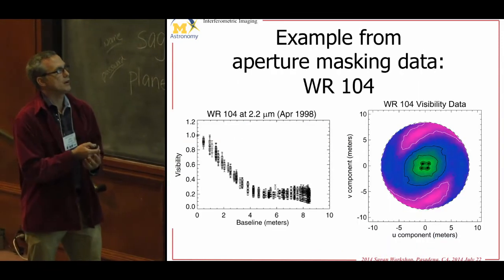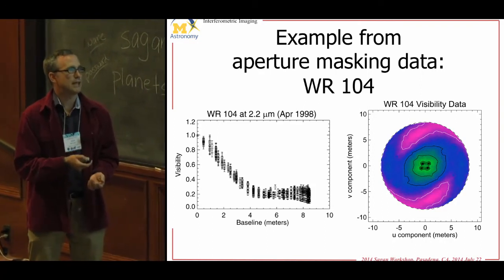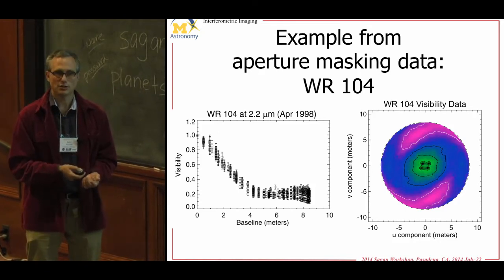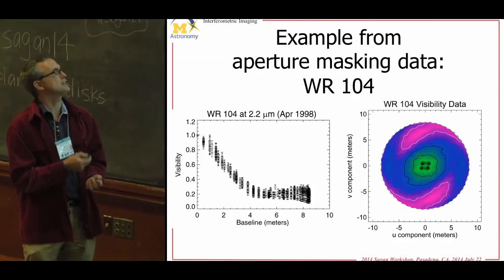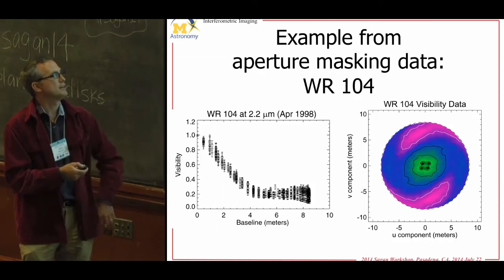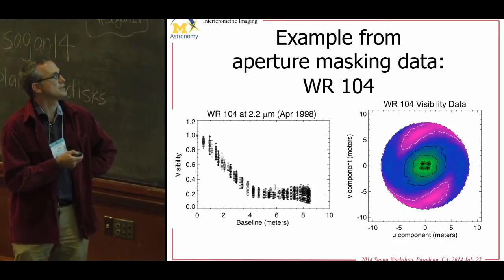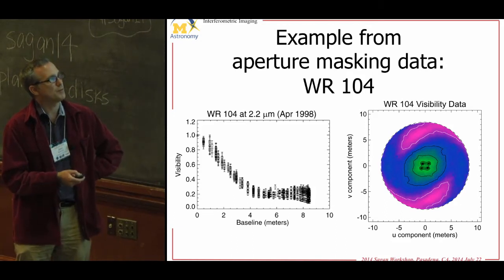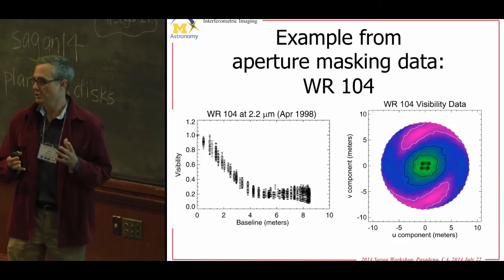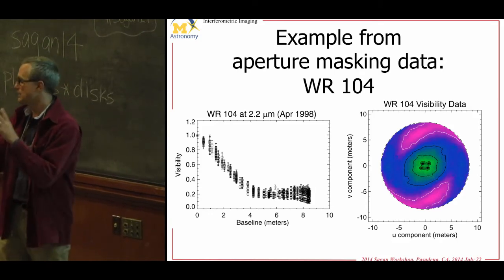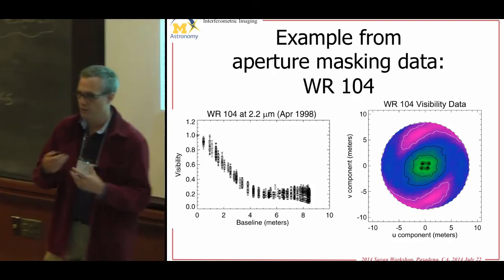With non-redundant aperture masking you get very good UV coverage — the baseline plane showing which baselines you have. With aperture masking you can have almost perfect coverage. Looking at a star with a dust shell: the visibility curve just goes down and levels off in 1D, but in 2D you see structure at different position angles — not a symmetric disk, but almost like a spiral structure.